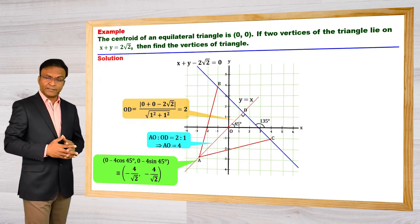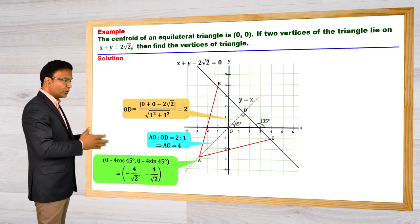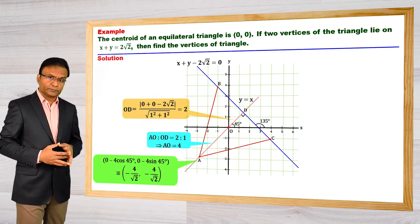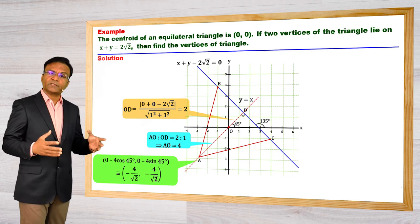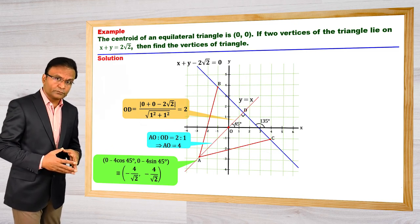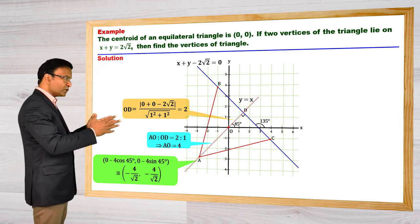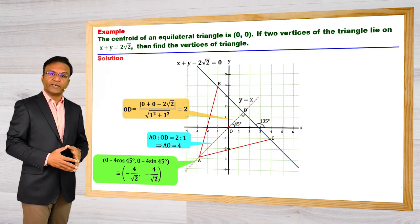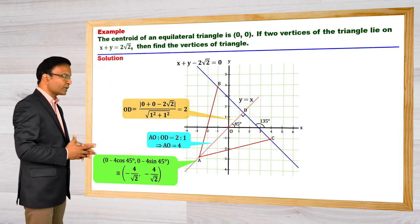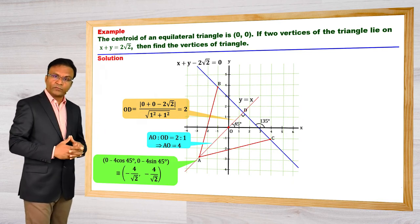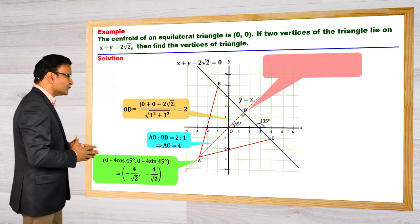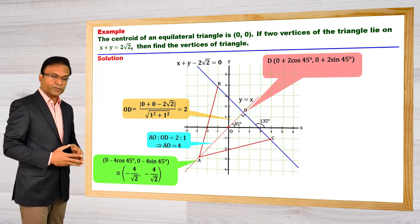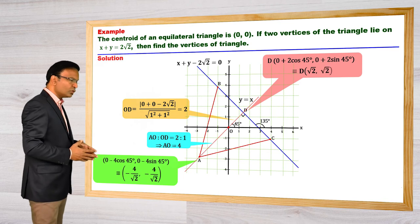Now for B and C: B and C are lying on the line which makes an angle of 135 degrees with the x-axis. Using some geometry we can find distances BD and CD. Using the parametric form of a straight line, we can find the coordinates of points B and C. The coordinates of point D are given by (0 + 2cos45°, 0 + 2sin45°), which equals (√2, √2).